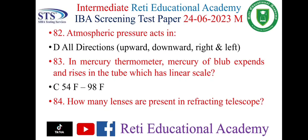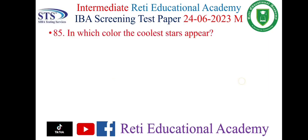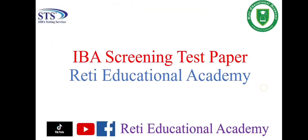Question number 84: How many lenses are present in a reflecting telescope? The correct answer is B: two lenses. Question number 85: In which color does the coolest star appear? The correct answer is C: red. Subscribe to the Educational Academy YouTube channel and also follow us on TikTok and Facebook.